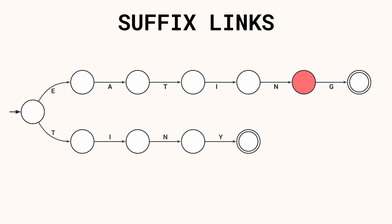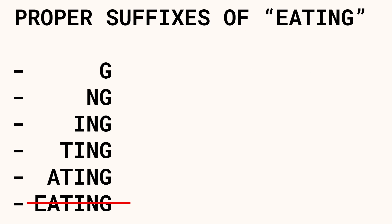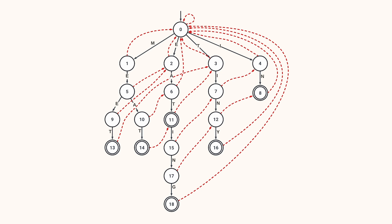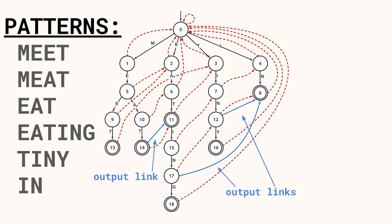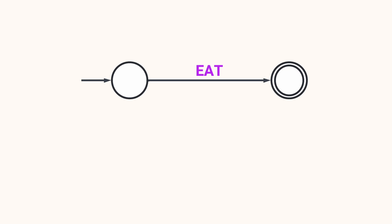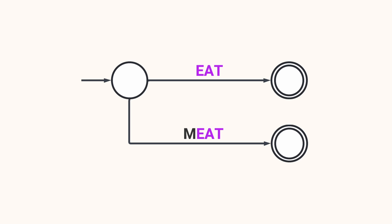Failure links are also known as suffix links: when you fail at a given state it means you've seen a few letters and you want to reuse as many as possible. A suffix link points to the state that represents the longest proper suffix of the current string that is also a prefix of another pattern. 'Proper suffix' means the word itself is not considered a suffix. We also need output links, because some patterns can be substrings of other patterns — for example, 'it' is a substring of 'meat', so finding 'meat' should also report 'it'.